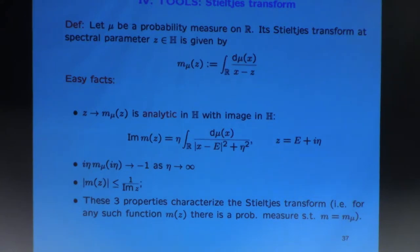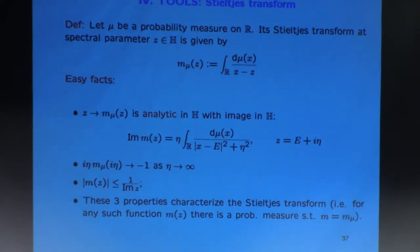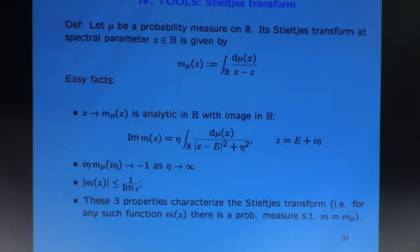Now, coming back to mathematics, let me go quickly through a few facts about the main tool, the Stieltjes transform — though those who went to Torben's exercise session have already done exercises on it. For any probability measure on the real line, there is a Stieltjes transform: you form it with a spectral parameter z in the upper half plane H, given by the integral m(z) = ∫ 1/(λ − z) dμ(λ). There are many easy facts about this Stieltjes transform.